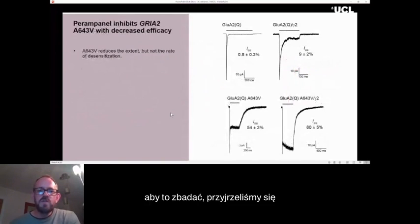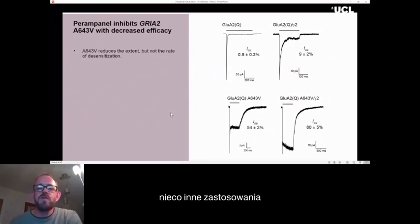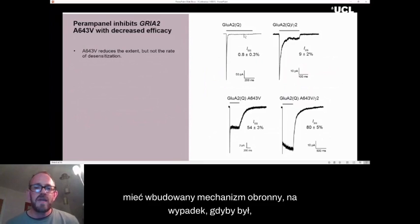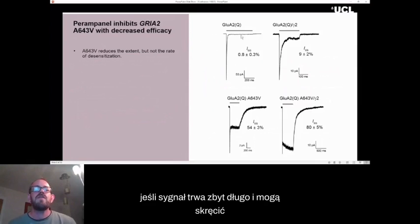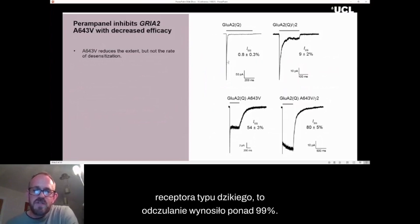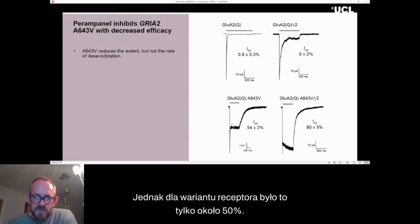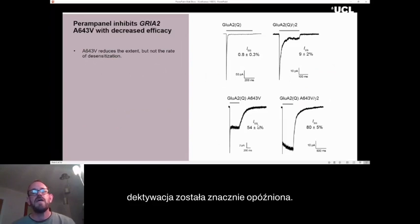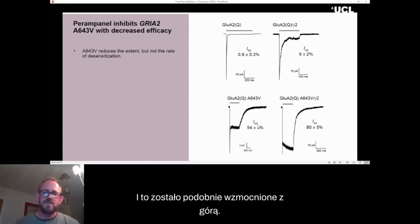And so to examine this, we looked at a slightly different application of glutamate. So AMPA receptors and mostly ligand-gated ion channels have a defense mechanism built in, in case the signal lasts too long, and they can turn themselves off in the continued presence of glutamate. For the wild type receptor, this desensitization was over 99%. However, for the variant receptor, it was only about 50%. So again, not only is there a deficit in closure, deactivation was greatly delayed. Desensitization is also greatly affected. And this was similarly amplified with the TARP.